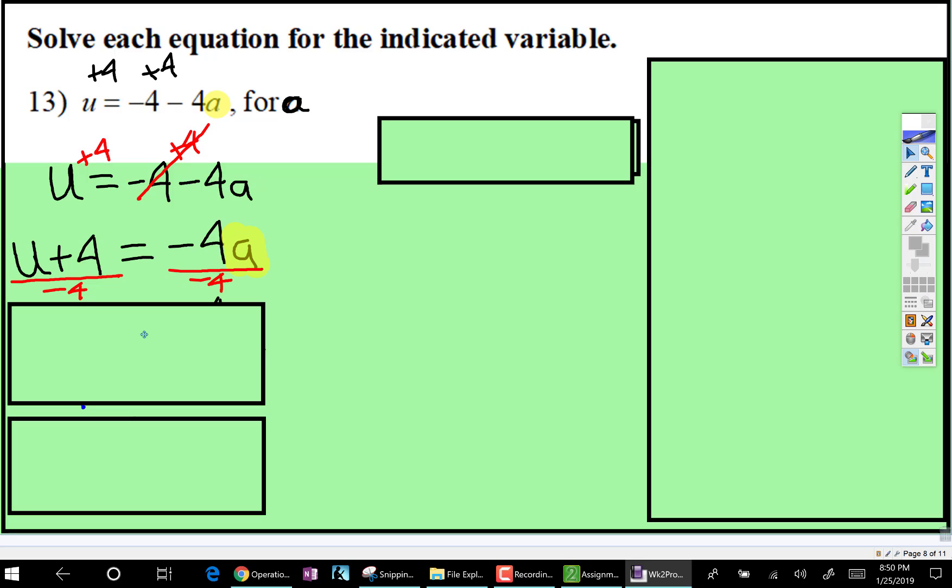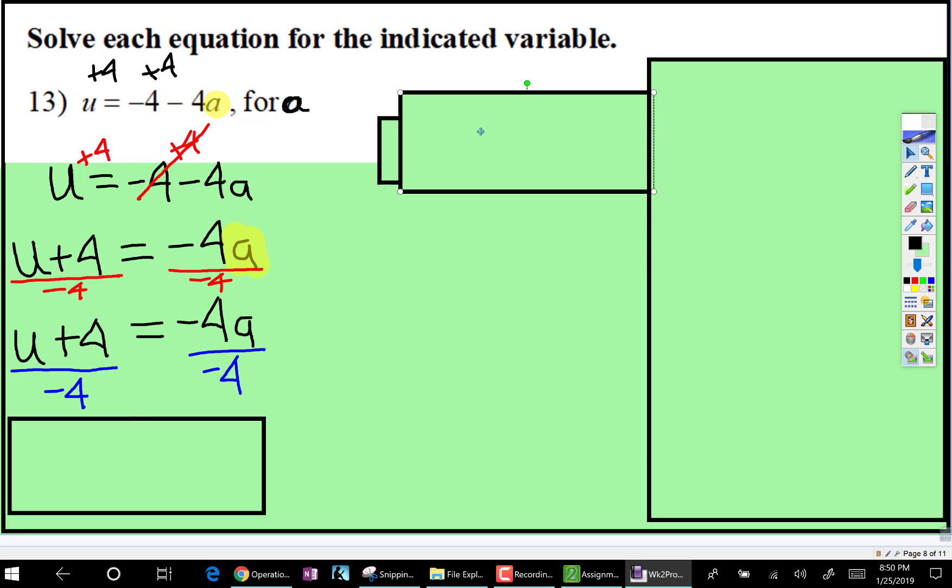But here's the catch. Let's see, yep, I went ahead and did that. The catch is, when you divide, well, when you divide the right side, that cancels, and then the a is by itself. But on the left side, we never want a negative sign in the denominator.